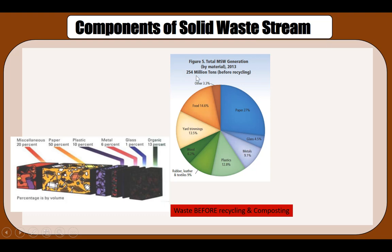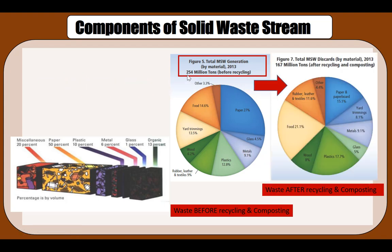If we look at by weight or by mass, for the year 2013 prior to recycling, this is the distribution of the various components of solid waste. Again, almost one-third is paper and almost one-third is food and yard trimmings, with the other materials, for a total of 254 million tons before recycling.